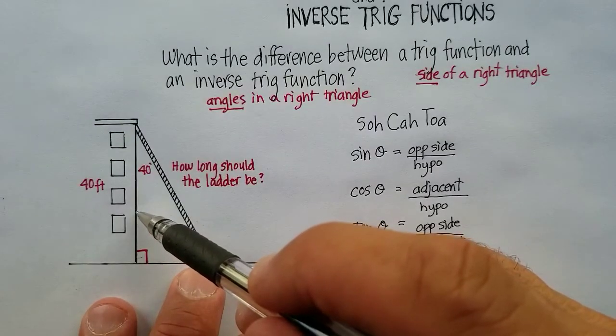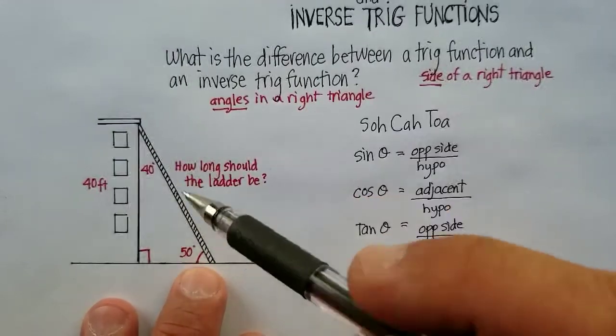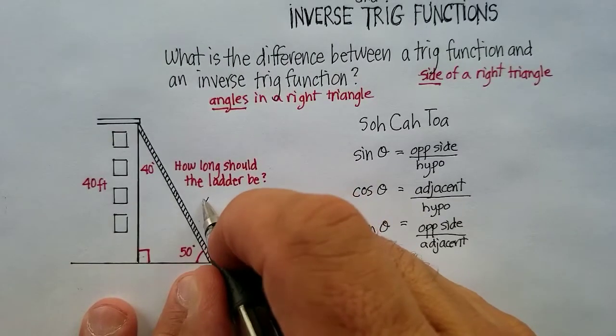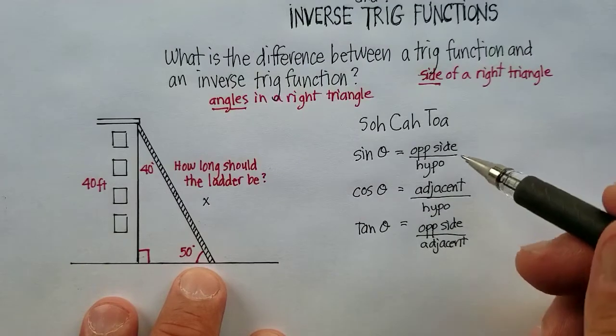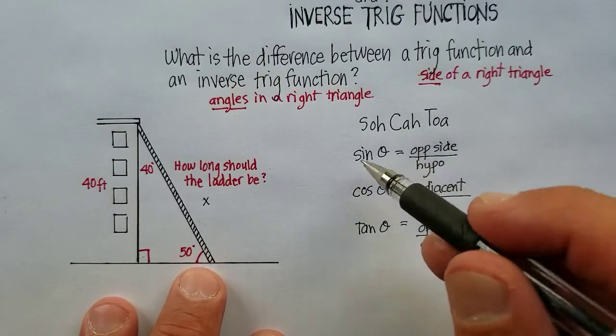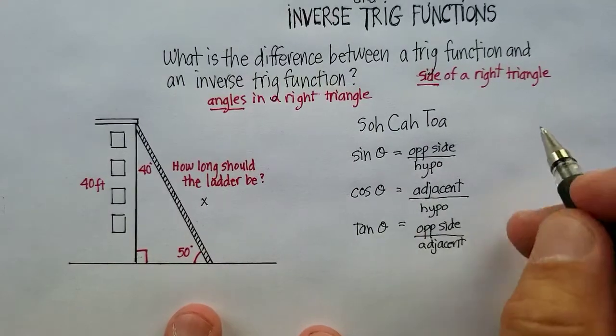So I know the opposite side, and I'm looking for this side here. Okay, we'll just call this side x. So what would be the opposite over the hypotenuse? Opposite over hypotenuse, looks like we're going to use the sine function. So let's go fill what we know in.